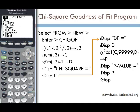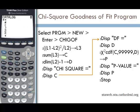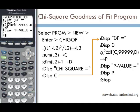Now we want to display ALPHA P. Add a label — type "P-value =" in quotes, using the equals sign from the catalog (SECOND ZERO). Close the quote and press ENTER. Then display P.